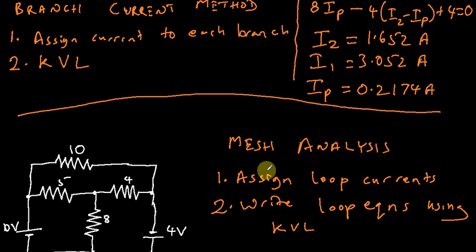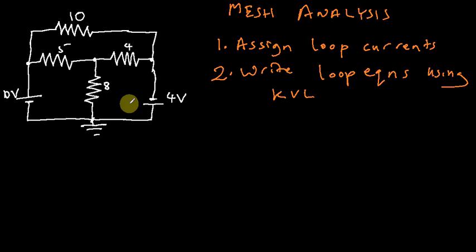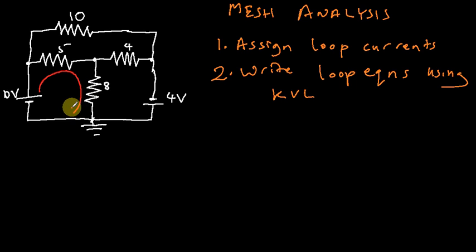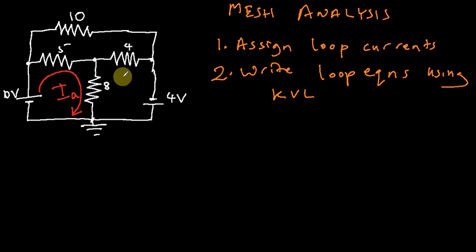We assume that each loop has its own current. What we're going to do is assign a current to each loop. You could assign your current in any direction — most people assign them clockwise. So we assume there is a current inside this first loop moving in a clockwise direction, and we assign a name to that current. Let's call that IA. Then we have a current inside this second loop also going clockwise — let's call that IB.